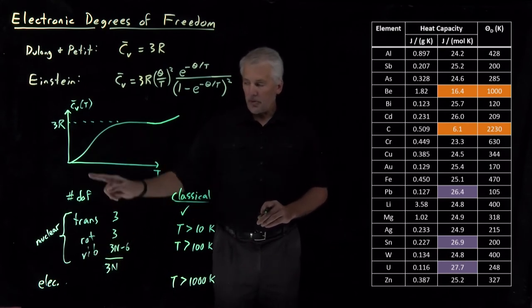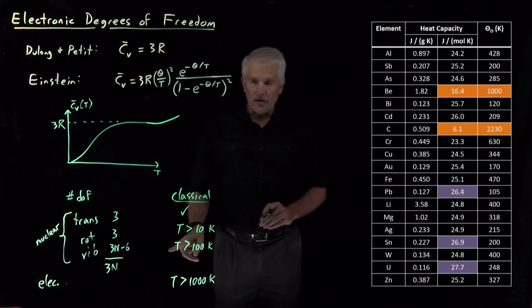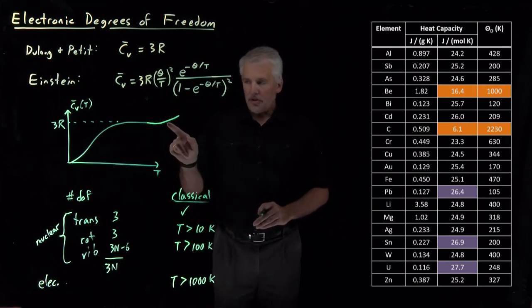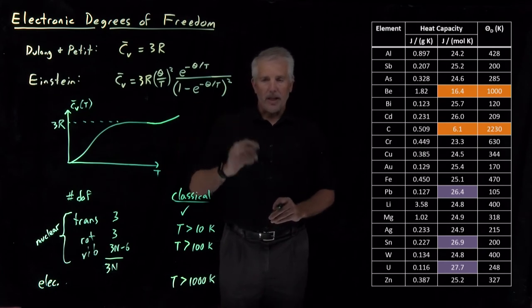This rise from zero up to the Equipartition Theorem limit of 3R happens as we cause the vibrational, as we increase the temperatures large enough to cause the vibrational motions to be treated classically. But the electronic motions don't begin to be treated classically until much higher temperatures.